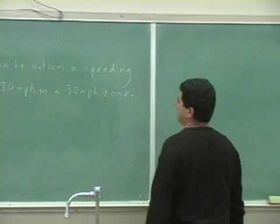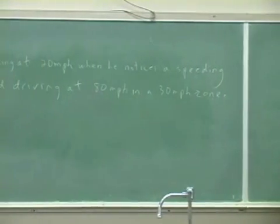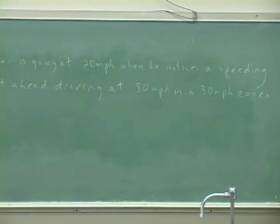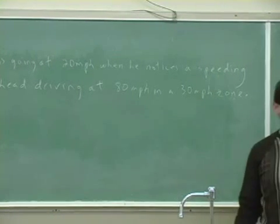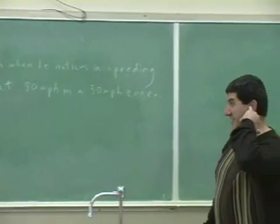So, a police car is going at 20 miles per hour when he notices a speeding car 100 feet ahead driving at 80 miles per hour in a 30 mile per hour zone. It's way, way over.